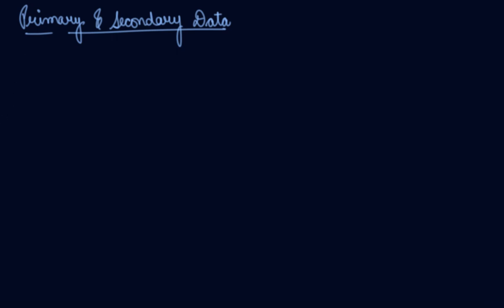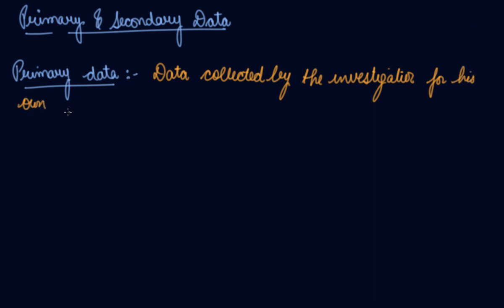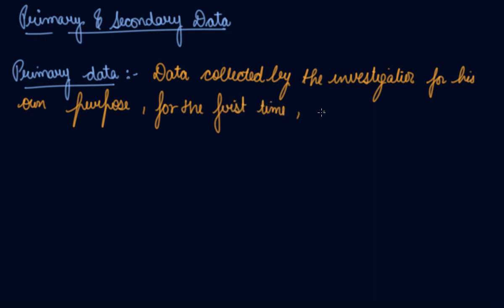In this video we will be studying about primary and secondary data. Primary data is your first-hand data that is collected by yourself for your own purpose — for answering your own questions. It is data collected by the investigator or their helping people like field workers, for their own purpose, for the first time from beginning to end.